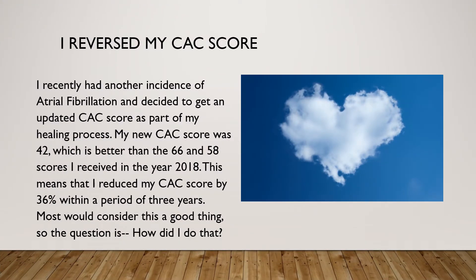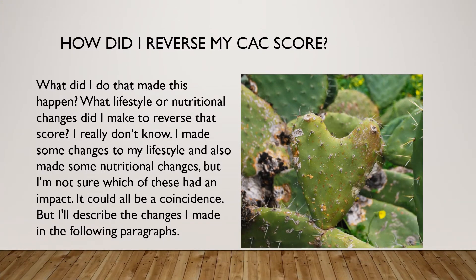I recently had another incidence of atrial fibrillation and decided to get an updated CAC score as part of my healing process. My new CAC score was 42, which is better than the 66 and 58 scores I received in 2018. This means I reduced my CAC score by 36% within a period of 3 years. So the question is — how did I do that? I made some lifestyle and nutritional changes, but I'm not sure which had an impact. It could all be a coincidence, but I'll describe the changes I made.